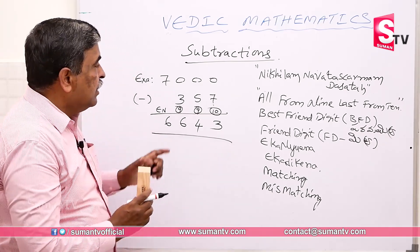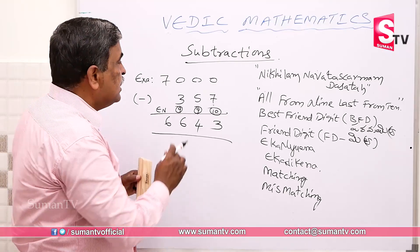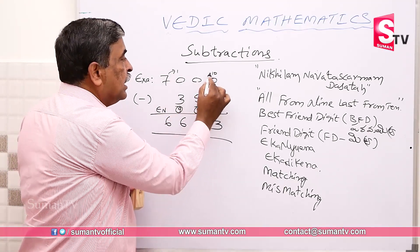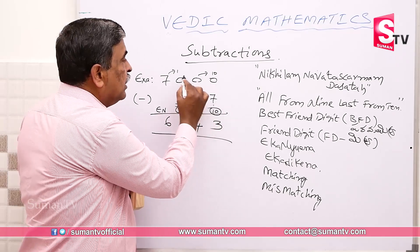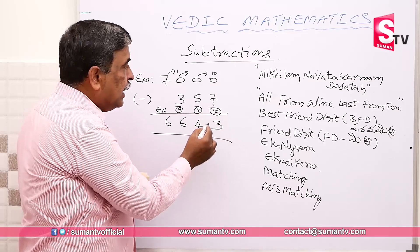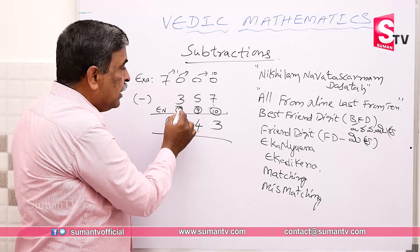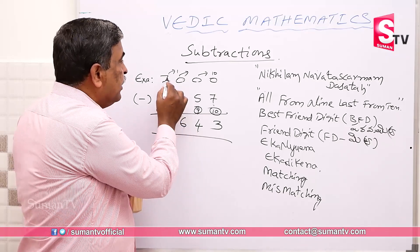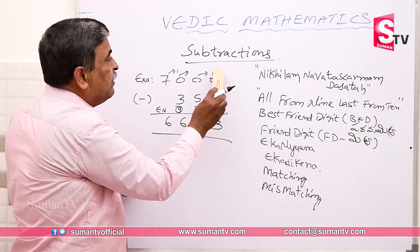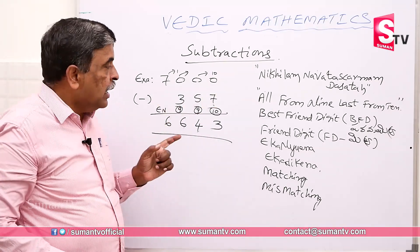Let's verify using the traditional or conventional method: here we have 10, here we have 10, here we have 10, here we have 11. So 10: 7 plus 3; 9: 5 plus 4; 9: 3 plus 6; giving us 6. The result matches. Direct — okay, let's do the next example.